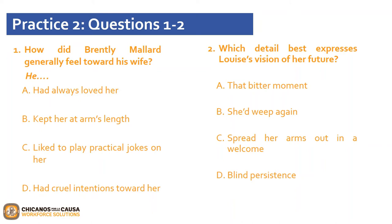Now that we've read Practice 2, let's start answering the following questions. Question 1 asks: how did Brantley Mallard generally feel toward his wife? A, had always loved her; B, kept her at arm's length; C, liked to play practical jokes on her; or D, had cool intentions towards her. The correct answer is A, had always loved her. In the first paragraph, Louise recalls her husband's face — 'the face that had never looked save with love upon her.' The term 'save' means 'except.'